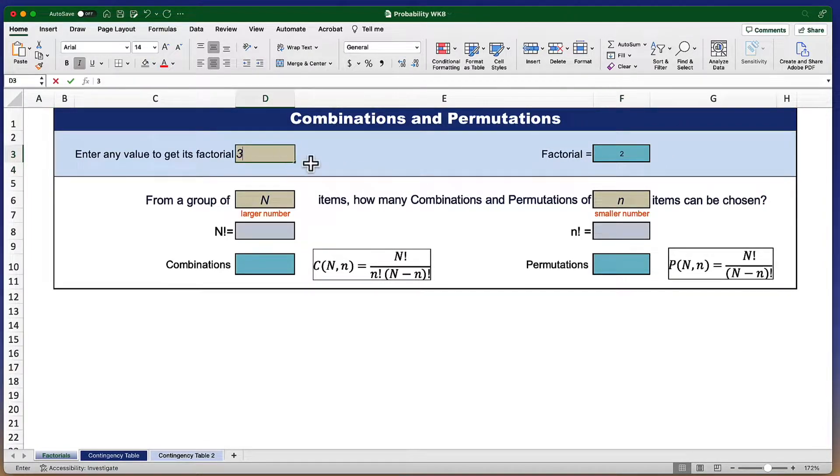The factorial of 3 is 3 times 2 times 1, which would be 6. The factorial of 5 is 120. The factorial of 8 is 40,320. And you can see that these numbers are going to get pretty big pretty fast,